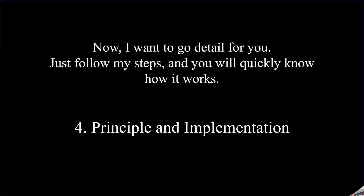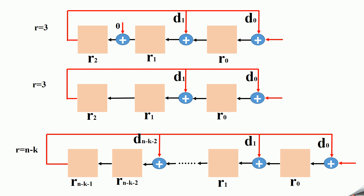Now I want to go into detail for you. Just follow my steps and you will quickly know how it works. The fourth part is the principle and implementation. If we want to transmit K bits of data word with R redundant bits, then we need N minus K registers and N minus K minus 1 XOR gates. In other words, if R equals 3, then we need 3 registers and 2 XOR gates, and they can help implement the CRC encoding.